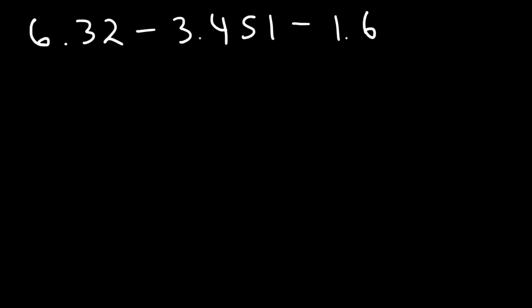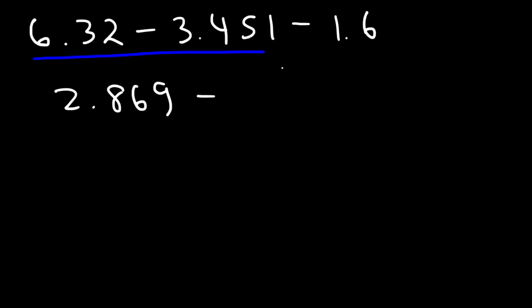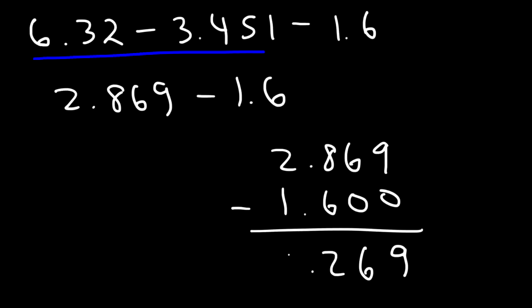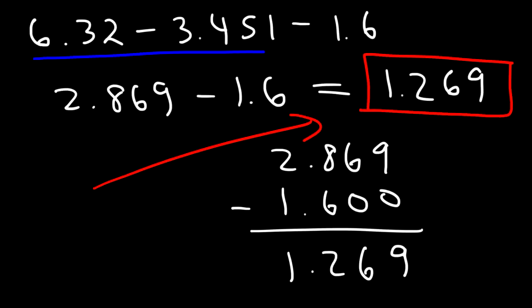Now replace the first two numbers with 2.869 and subtract 1.6. So 9 minus 0 is 9, 6 minus 0 is 6, 8 minus 6 is 2, and 2 minus 1 is 1. The final answer is 1.269. That's what you can do if you have a subtraction problem with three numbers.